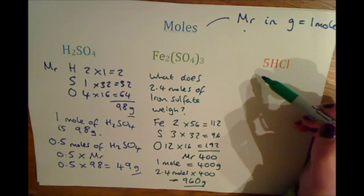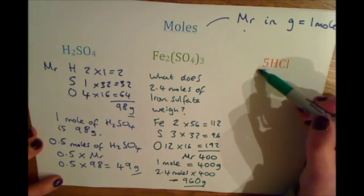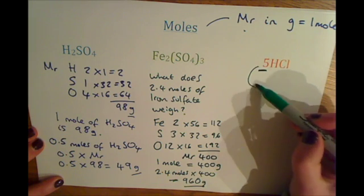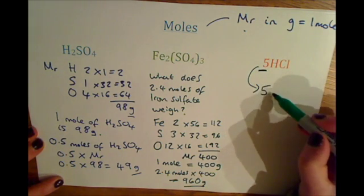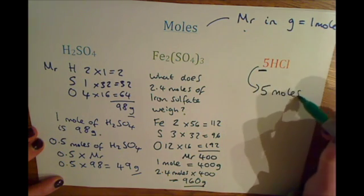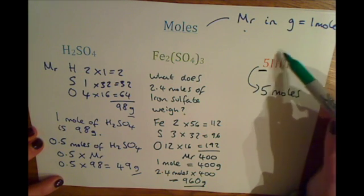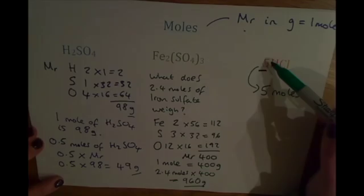When you're balancing equations, you put multipliers, so numbers in front of compounds. And essentially what this is saying is you've got 5 moles of hydrogen chloride in the reaction because you're multiplying everything by 5.